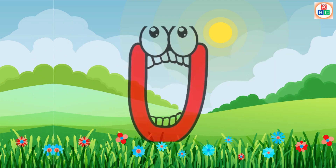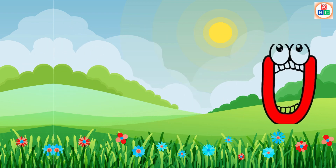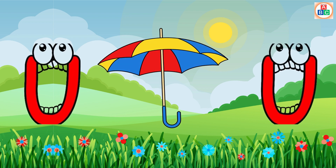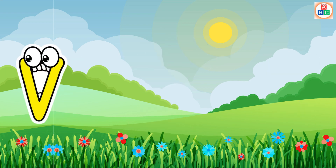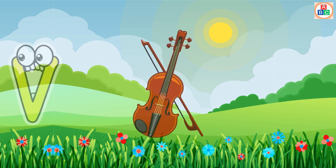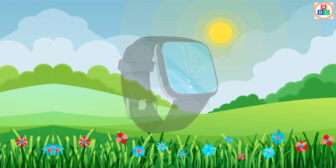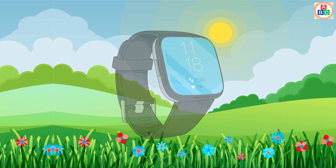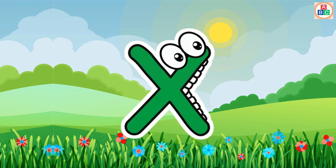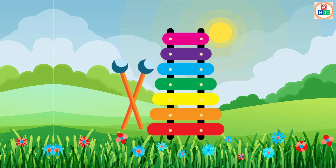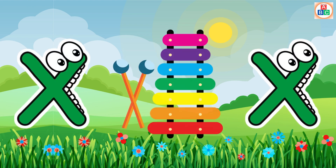U is for Umbrella, U-U-Umbrella. V is for Violin, V-V-Violin. W is for Watch, W-W-Watch. X is for Xylophone, X-X-Xylophone.